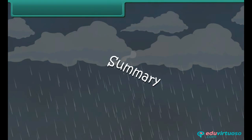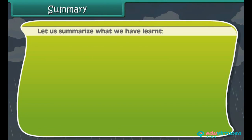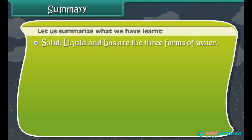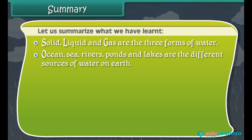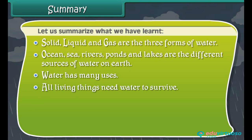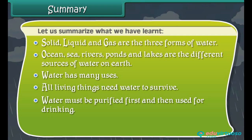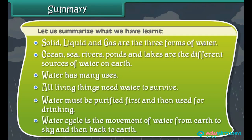Let us summarize what we have learned. Solid, liquid, and gas are the three forms of water. Oceans, seas, rivers, ponds, and lakes are the different sources of water on earth. Water has many uses. All living things need water to survive. Water must be purified first and then used for drinking. Water cycle is the movement of water from earth to sky and then back to earth.